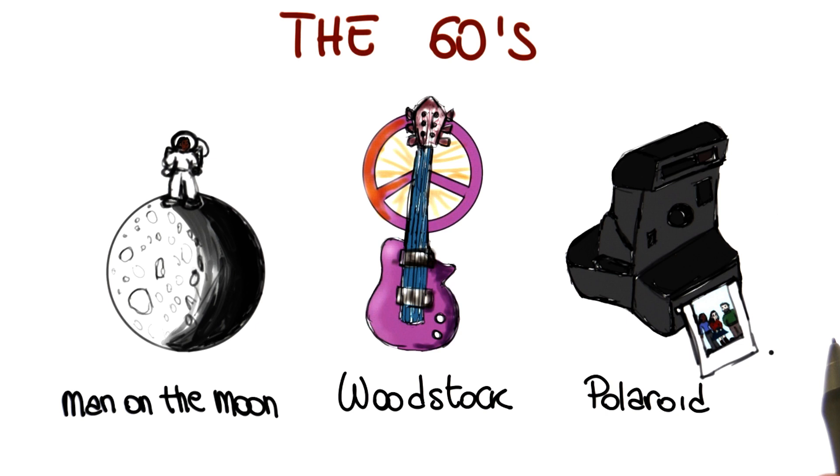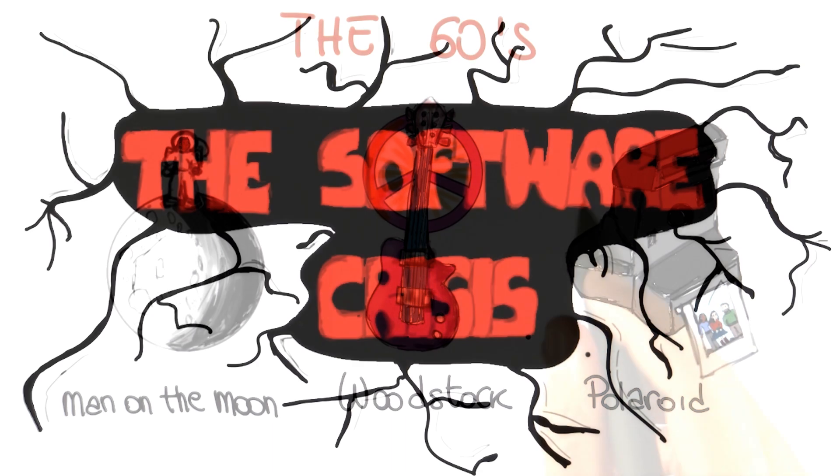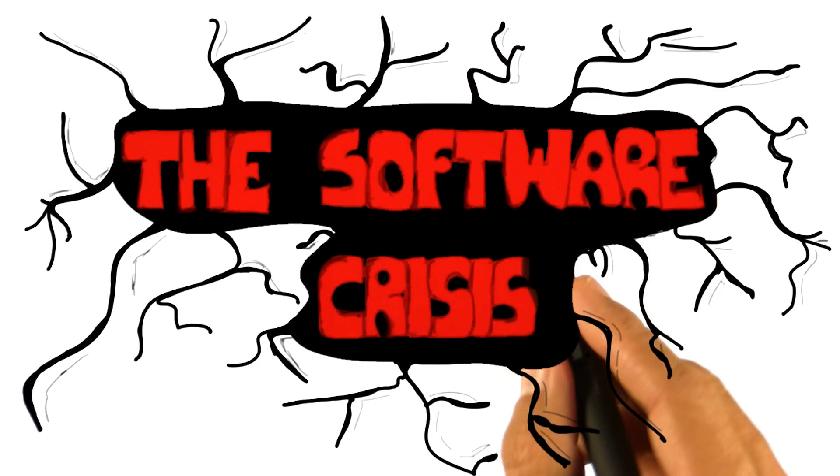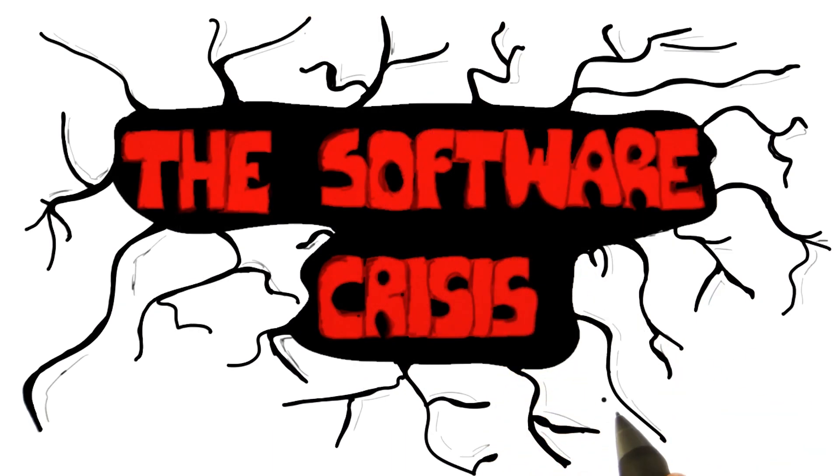Concurrently to these events, which you probably didn't witness in first person, that was also the time when people started to realize that they were not able to build the software they needed. This happened for several reasons and resulted in what we call the software crisis. So let's look at some of the most important reasons behind this crisis.